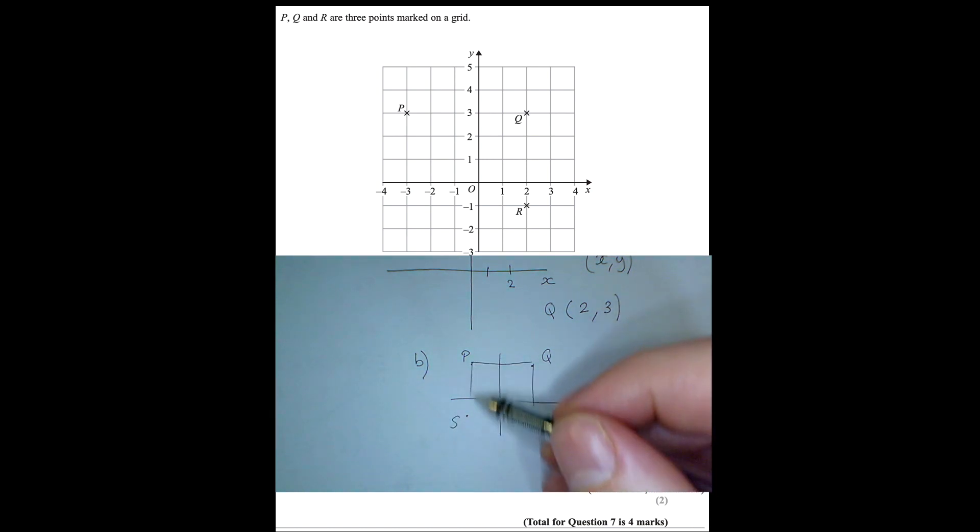So if we think about it, the coordinates of S, well we've got the same x coordinate as P, and it's got the same y coordinate as R. So S looks like to me that we're going to have to go minus 3 along the x axis, and then we're going to have to go down 1, aren't we? So I think it's (-3, -1). OK.